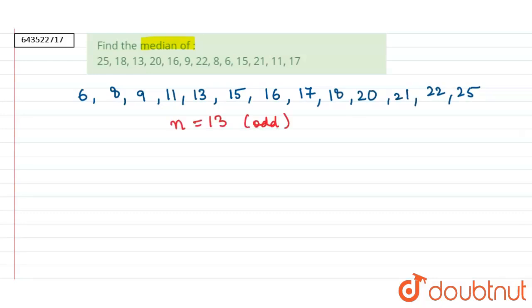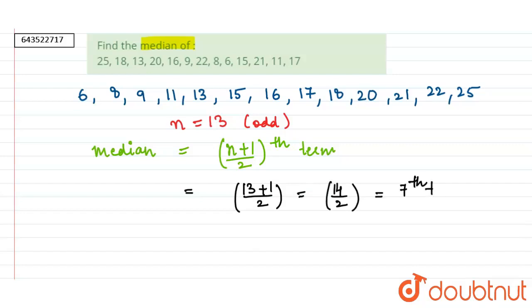n is equals to thirteen that is odd. Therefore median will be equal to n plus one by two-th term. This implies that thirteen plus one by two-th term. Hence this becomes fourteen by two which is seventh term.